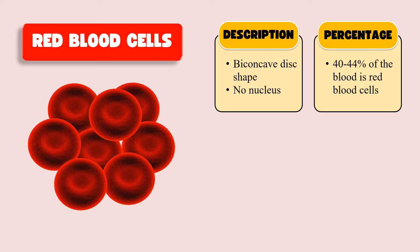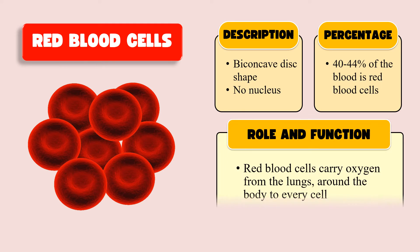Their percentage is 40 to 44 percent of blood. As far as their role is concerned, RBCs carry the exchange of gases — they carry oxygen from the lungs and supply it to the body. They contain a pigment called hemoglobin, which binds to oxygen and carries it to the various body cells.